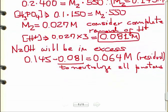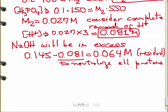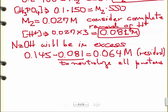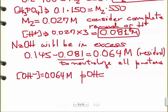Now we have the concentration of hydroxide, so we can calculate everything we need. The concentration of hydroxide is 0.064 molar since sodium hydroxide is a strong base. The pOH is therefore minus log of 0.064, which gives 1.19.